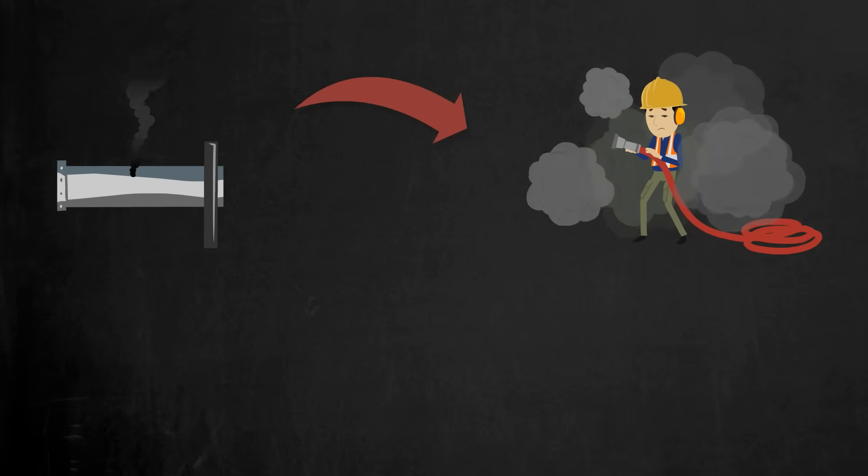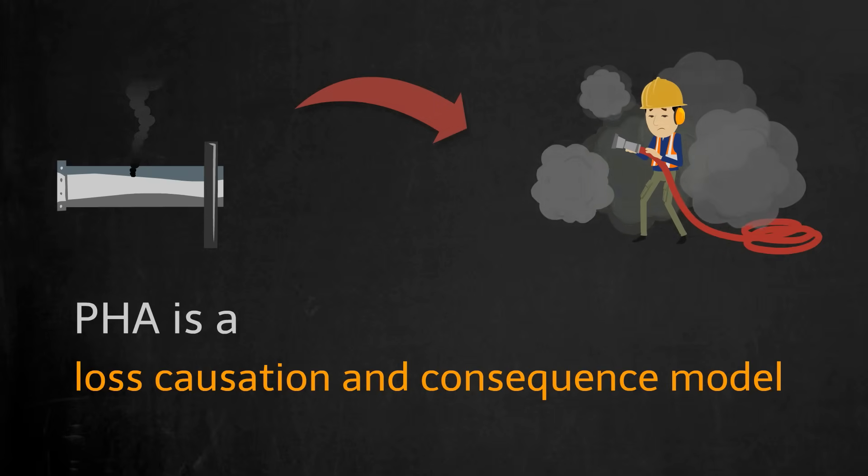A process hazard analysis, or PHA, is fundamentally a loss causation and consequence model. This helps a company understand what must be done to control the risk.